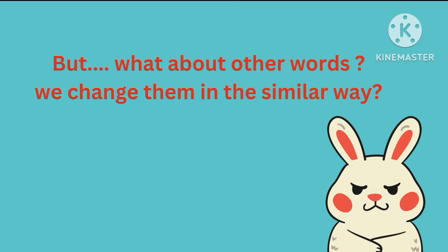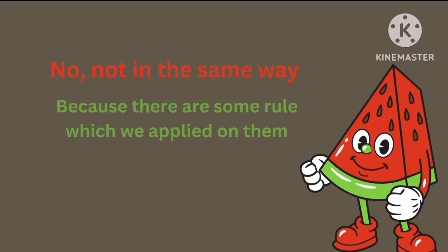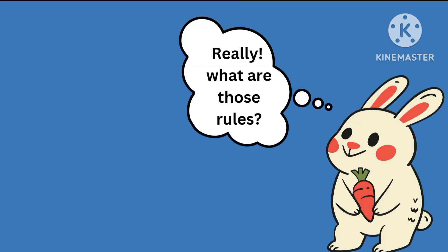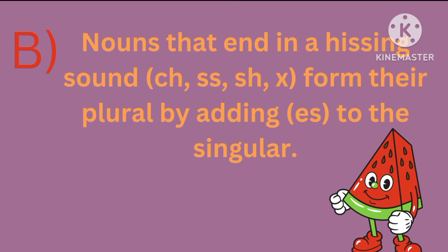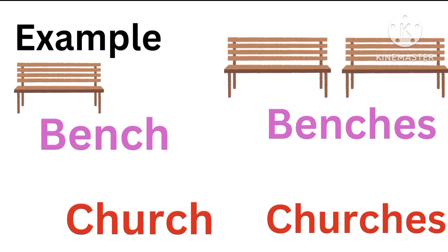But what about other words — do we change them in the same way? No, not always, because there are some rules which we apply to them. Rule B: Nouns that end in a hissing sound like CH, SS, SH, or X form their plural by adding ES to the singular. For example, bench becomes benches and church becomes churches, because CH changes to ES.